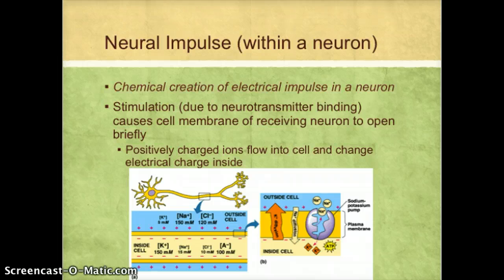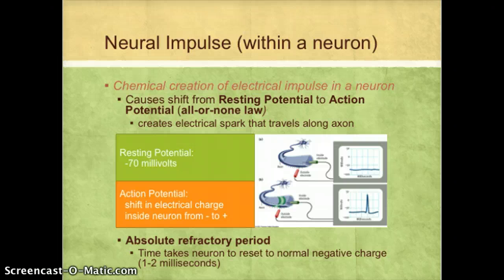When the cell is at rest, the chemicals inside overall have an electrical charge of negative 70 millivolts. What happens when the neurotransmitter binds is that it allows positively charged ions like sodium to flow in from outside the cell. Since sodium has a positive charge, this causes a shift of electrical charge inside the neuron from negative to positive, creating an electrical spark within the cell. That electrical spark travels down along the axon. Once a neuron has fired this neural impulse or action potential, it has to reset itself back to its normal negative charge by flushing the sodium out — a process that typically takes one to two milliseconds.